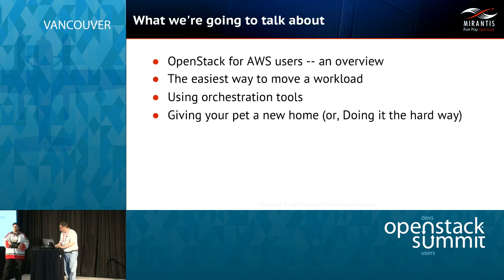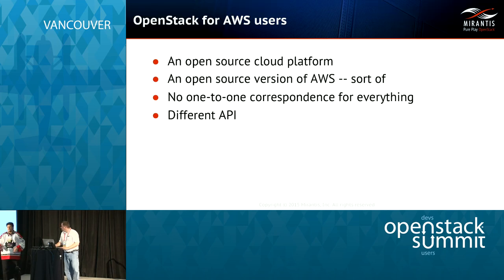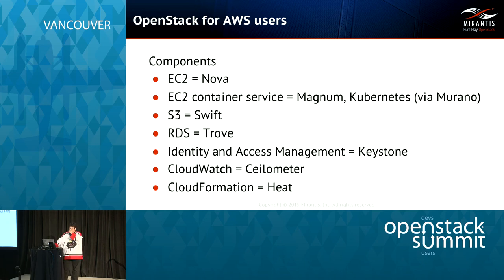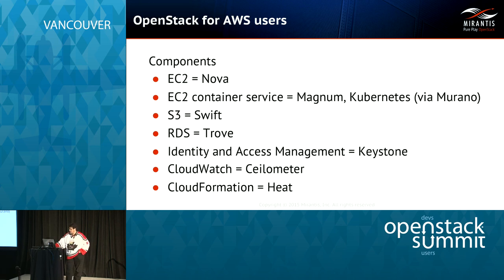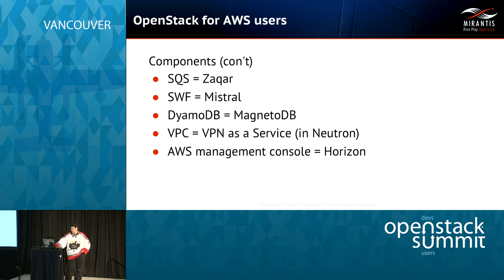There's also Magnum, which is the new Container Service within Nova. You can use Kubernetes through Murano. There's Trove for Database as a Service. For CloudWatch, we have Ceilometer for monitoring. CloudFormation — the AWS orchestration service — corresponds to Heat in OpenStack. There's also a queuing service, SWF workflow service corresponds to Mistral, and the management console for all of this is Horizon.